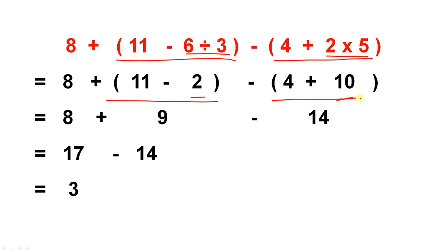We've only made an initial simplification. Now, 11 minus 2 gives you 9. So that's the first bracket solved. And 4 plus 10, that's 14. Now, these operations are carried down as per normal. 8 plus 9 gives you 17, and here is your 14. 17 minus 14 gives you 3.